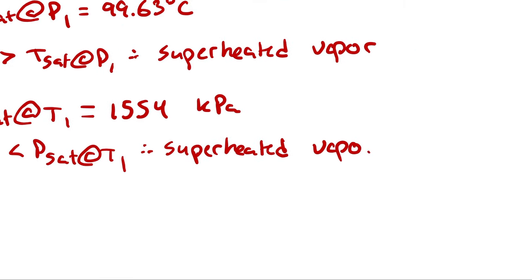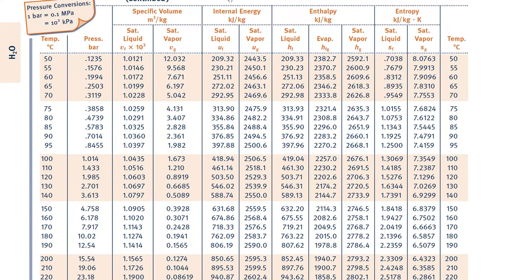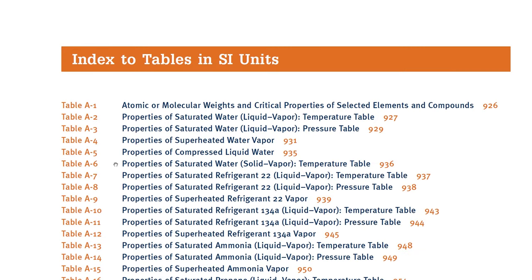You should be familiar with both approaches, because in some cases you won't have the option of using either or — you will only have one. You have to be proficient at both strings of logic that allow you to conclude the phase. Anyway, with either route we know it is a superheated vapor, at which point we can go into our superheated vapor tables, which are table A4 for water.